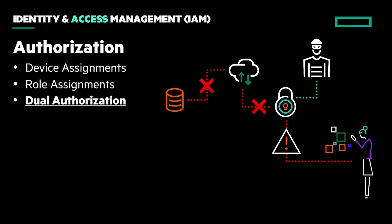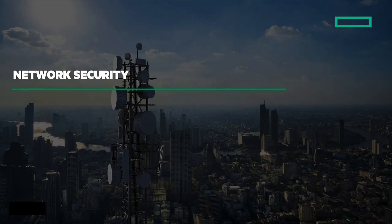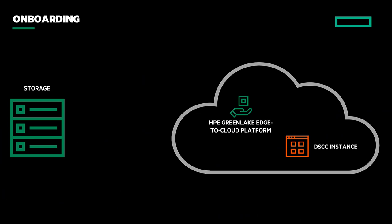Now that we've talked about the DSCC environment itself, let's shift our focus to network security. First of all, all devices need to go through an onboarding process with DSCC at the beginning. When your device is shipped to you, it comes with a set of unique signed certificates already installed during the manufacturing process. Then the device will use those certificates to initialize a connection to a predefined URL through a standard outbound port for HTTPS.